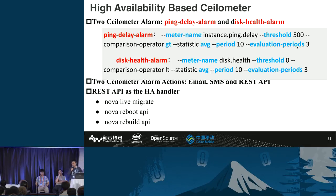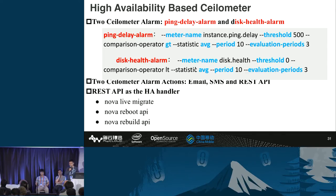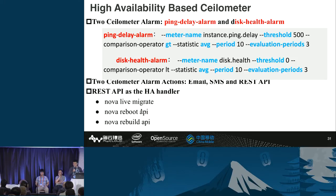We define two Ceilometer alarms. The ping delay alarm calculates an average value once every 10 seconds; if three continuous average values exceed the threshold, Ceilometer triggers a ping delay alarm. The disk health alarm works the same way. Ceilometer supports three alarm handler actions: email, SMS, and REST API. In China Mobile's private cloud, we use email and REST API handler actions. For the REST API, users can configure one or all of the Nova APIs to satisfy their requirements, or use another high availability system's API as the handler action.